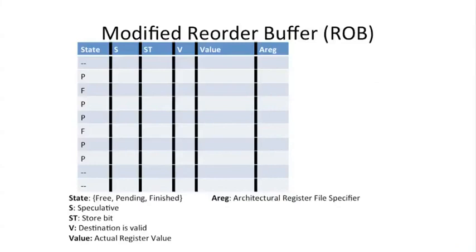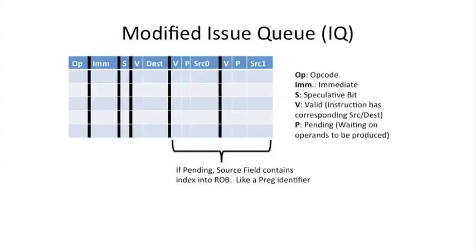The value is going to stick around in the reorder buffer entry while it's pending, and then it's actually going to write to the architectural register file when it gets committed. We also modify the instruction queue. This is going to tell us where to go get the values when we execute, and it's also going to store the values now.